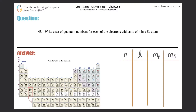Number 45: write a set of quantum numbers for each of the electrons with an n of four in a selenium atom. On the left side I have a periodic table because we definitely need to use that, and on the right I'm going to have a chart of all of the n equals four quantum numbers.